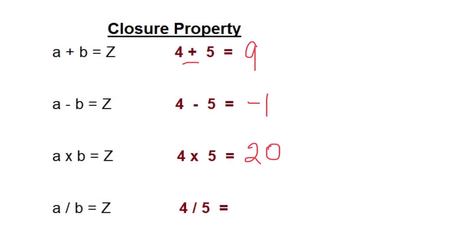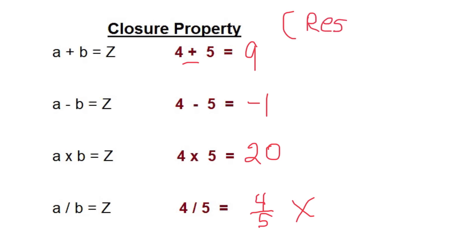4 divided by 5 is a fraction, so for the closure property of integers, divide does not work. You could have a division problem like 10 divided by 5 that gives an integer, but it has to work for all situations. So for closure property, plus, minus, and multiply are the only valid operations. Closure property means the result remains an integer.